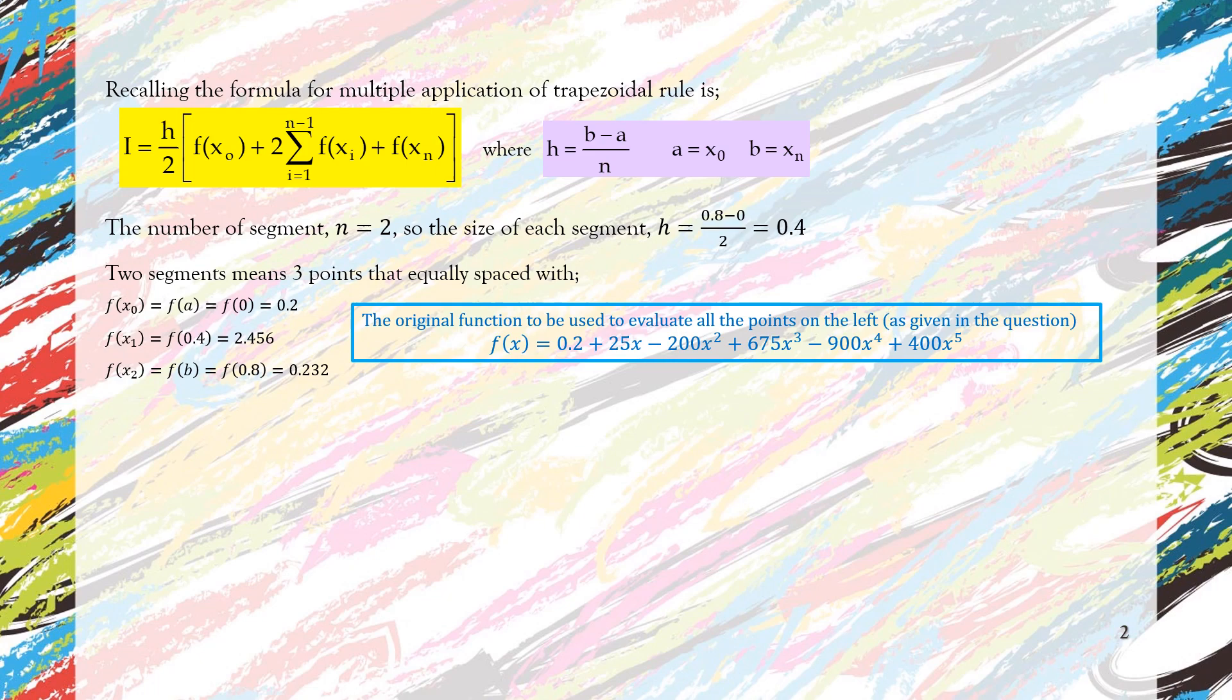And of course the last point which is f(x2), so we substitute the 0.8 into the function, we will get 0.232, still the same as the one that we had in the single application.